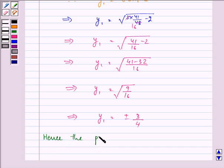The point is, if we take the positive side of it, 41 by 48 comma 3 by 4. Now the required equation of the tangent at this point